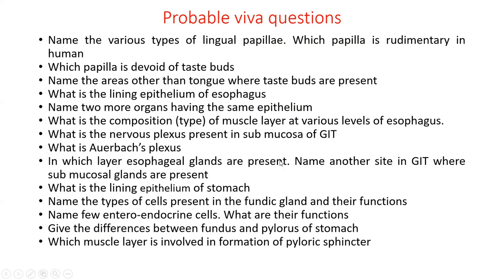This slide shows probable viva questions often asked during discussion of the histology slide. Students, please go through the questions and find out answers for them. With this we come to the end of discussion on GIT1, which includes the oral cavity, esophagus and stomach. Thank you for listening and watching.